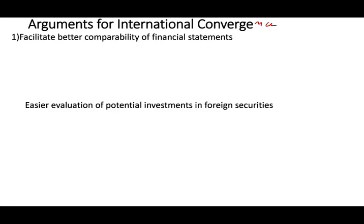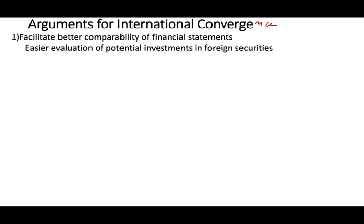Now let's talk about the arguments for international convergence — why do we need it? First, it facilitates better comparability of financial statements. We want the same financial statements across the globe so it's easier for potential investors to look at your company and invest. For example, if I am in South Africa and I look at the financial statements of a company in Europe, I would understand them, and if I have money I might invest because they use the same system I use in South Africa.